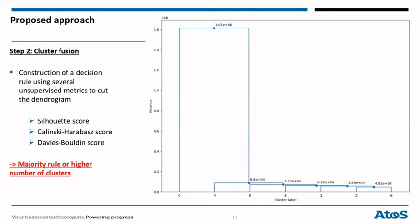The dendrogram presents in a simplified way the aggregation of clusters at each step. Several metrics are used to create a decision model to determine where to cut the dendrogram and specify the final grouping. The decision model was mainly built from three metrics: silhouette score, Calinski-Harabasz score, and Davies-Bouldin score.